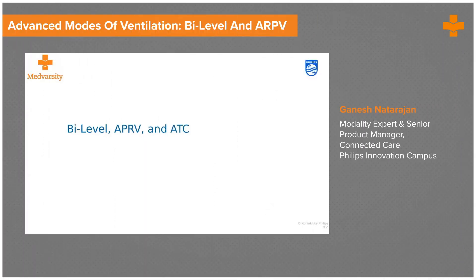We have looked at the dual modes or advanced modes in volume-based ventilation. Now let's look at some of the advanced modes or variations in pressure-based ventilation. Two of the most common modes that we hear about are called bi-level and APRV.